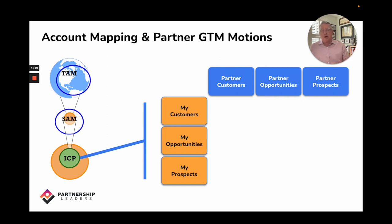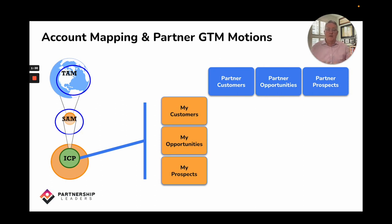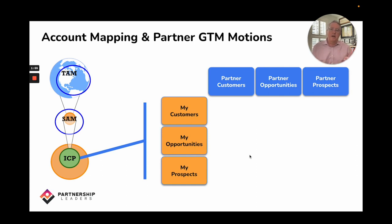This is where applications like Crossbeam come in, because they allow you to redact that information and go through the account mapping exercise anonymously. The only thing you're really sharing is where there's overlap — comparing customer lists, opportunity lists, and prospect lists. When you upload those lists into an application like Crossbeam, it allows you to do several different go-to-market motions, which are super important in developing a pipeline.